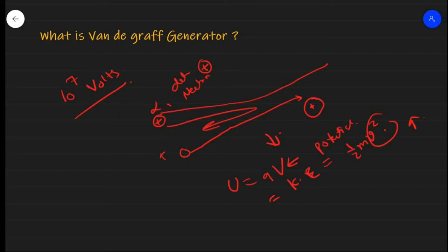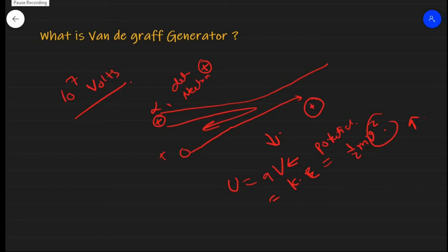In short, the Van de Graaff Generator accelerates charged particles to a very high velocity so that the charged particle strikes the nucleus without getting deflected or repelled back. In summary, the Van de Graaff Generator is used to accelerate charged particles to a very high energy, which is required for experiments to probe the small-scale structures of matter. Now we will quickly move on to its principle, construction, and working.